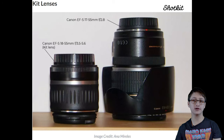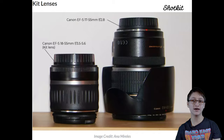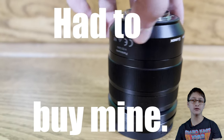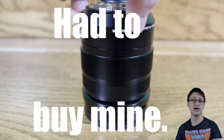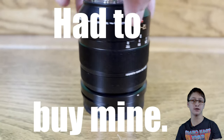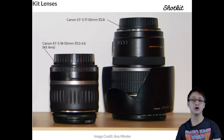Let us finish off with three surprise mystery lenses in the lightning round! First, we have kit lenses, which are basic lenses that come with a camera — assuming you got a lens with your camera — that typically have a range of 18–55mm.